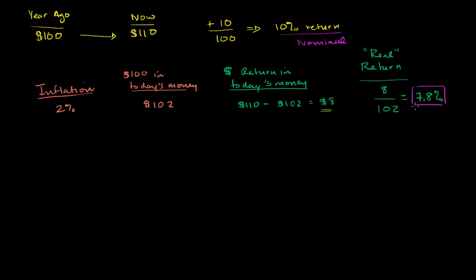In the last video, we were able to calculate the real return by putting everything in today's dollars. Put that $100 we invested a year ago in today's dollars, figure out what our actual return was, our dollar return is in today's dollars, and then we got a real return.